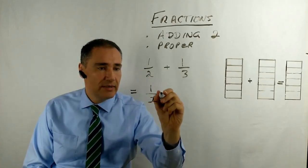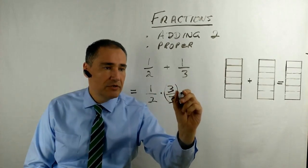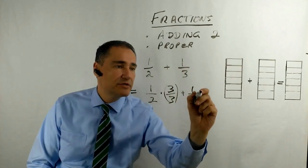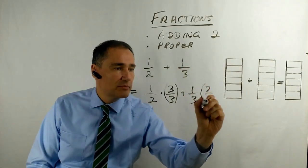So let's take 1 half, multiply it by 3 over 3. And we just add 1 third. Remember, we're going to multiply by 2 over 2. And let's just put some brackets around that.